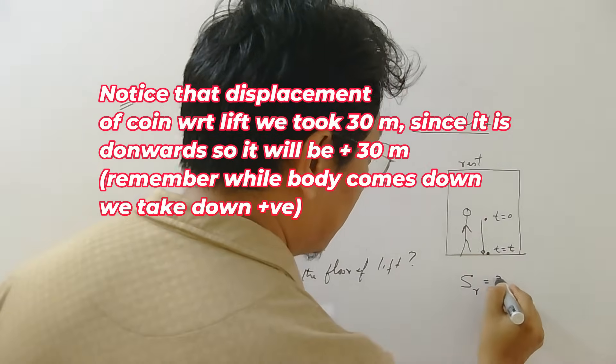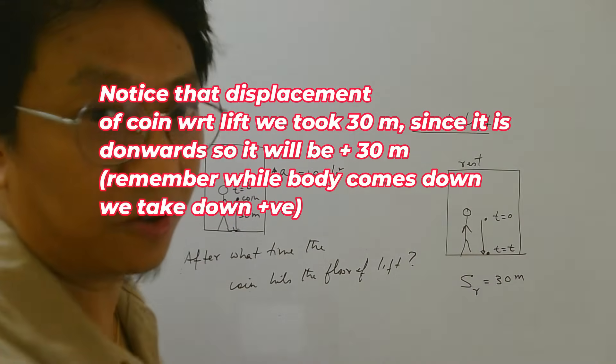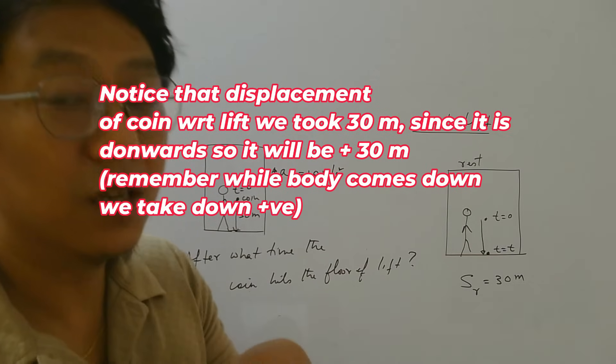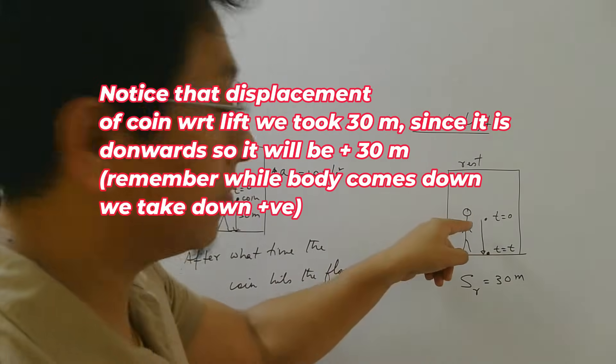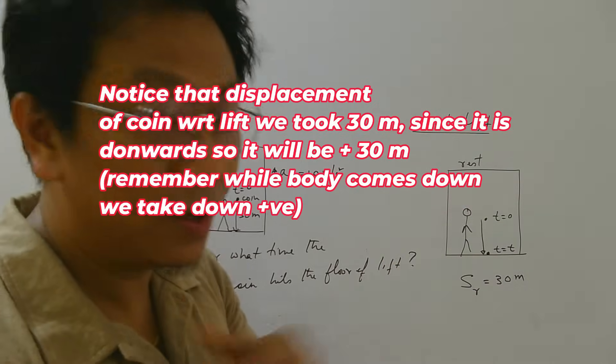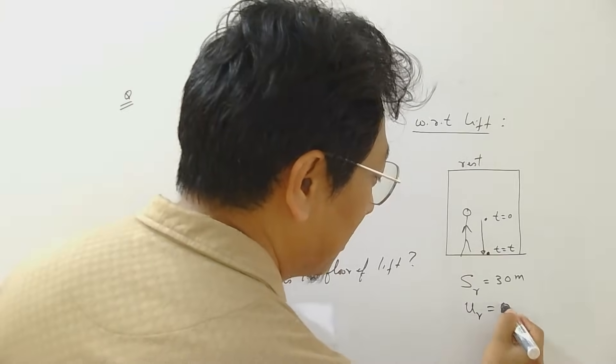So relative displacement is 30 meter. R means I am doing with respect to lift, so it is relative, it is not the displacement with respect to ground. Now what is the initial velocity? Since the coin is dropped in his frame, so when he will see the coin, it is at rest, initially. So initial relative velocity is 0.